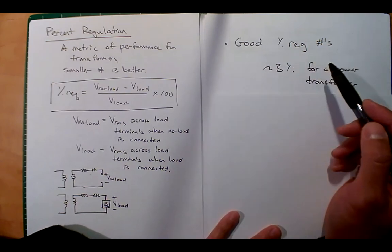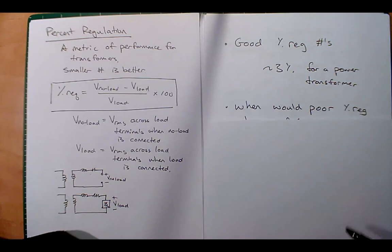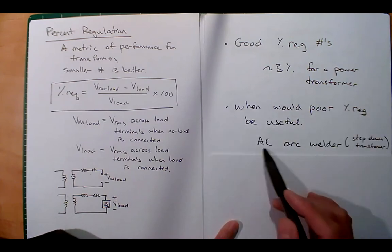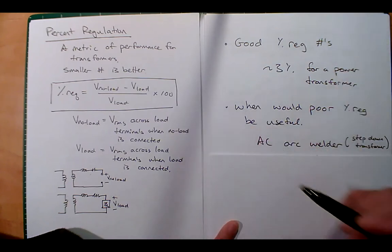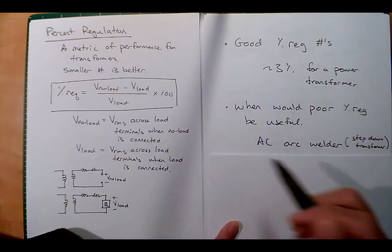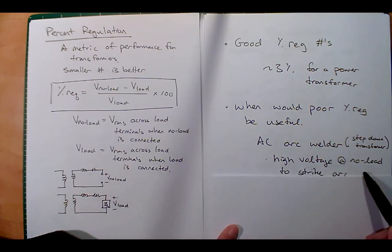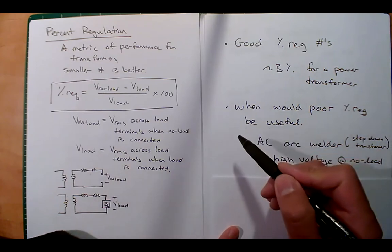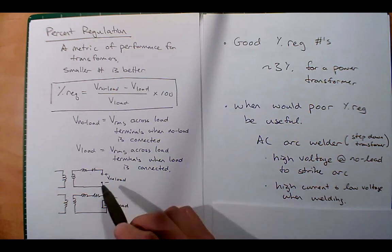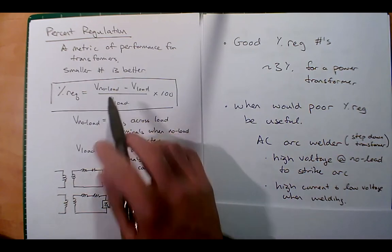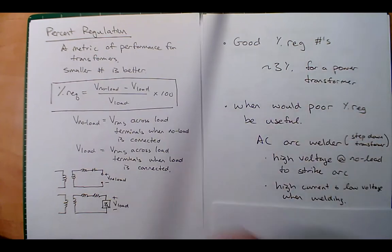There are examples where you might actually want a higher percent voltage regulation. A good example is an AC arc welder — essentially a step-down transformer giving low voltage and high current. With no load and your stick ready, you need high enough voltage to strike the arc. But once you're welding, you want high current and low voltage. So an arc welder might have a 4% voltage regulation, which is acceptable for that task. For a power transformer, though, you want to maintain that voltage and not let it droop.